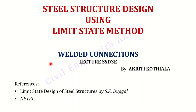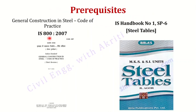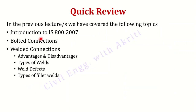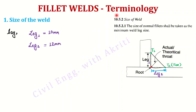Hello everybody. We'll continue with the subject steel structure design using limit state method. We were discussing the topic welded connections. The prerequisites for the subject are IS 800-2007 and steel tables of any standard publication. So far we've discussed an introduction to IS 800-2007 and the design of bolted connections in great detail. We've also discussed advantages and disadvantages of welded connections, types of welds, weld defects and types of fillet welds. In this lecture, we'll be discussing terminology based on IS 800-2007 for fillet welds.